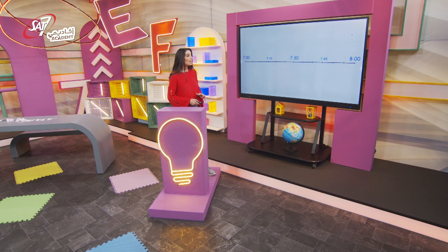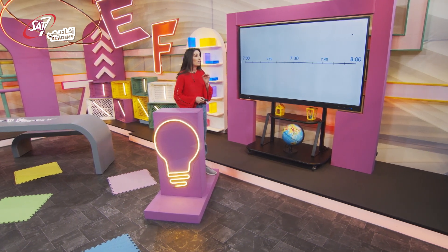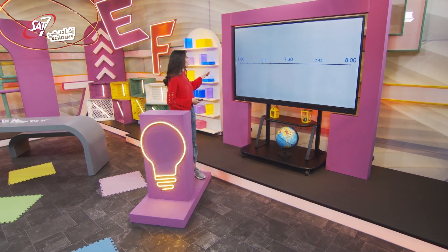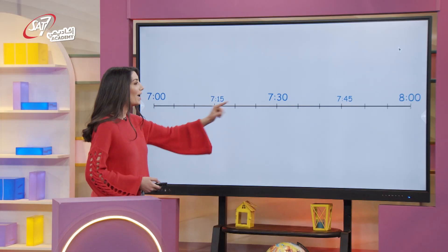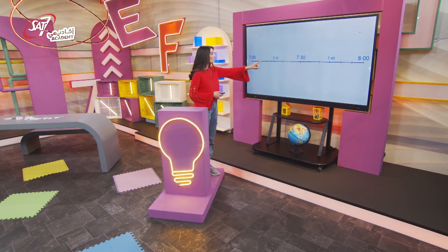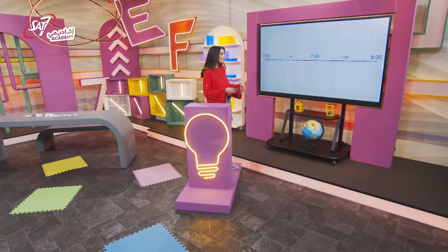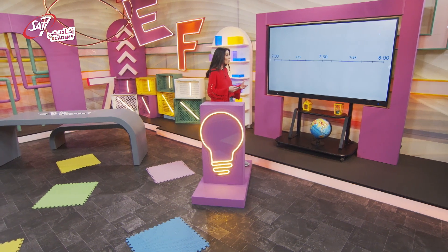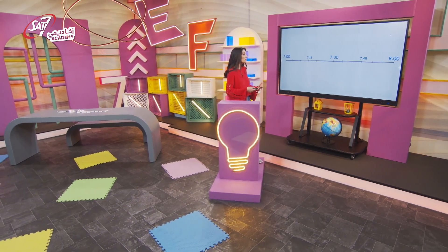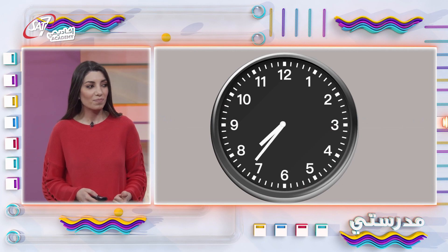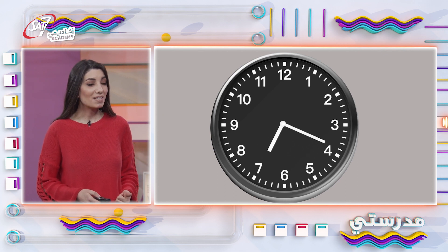Wael is meeting his friend at the library at 7:45. It takes him thirty minutes to get to the library. At what time should he leave his house? Look at this timeline — it shows the time from seven o'clock to eight o'clock, every fifteen minutes. Wael has to be at the library at 7:45, so he needs to leave his house thirty minutes before this time. We will begin at 7:45 and go back thirty minutes. What's forty-five minus thirty minutes? We go backwards fifteen minutes twice. It stops at 7:15.